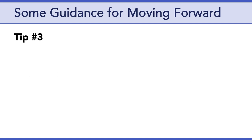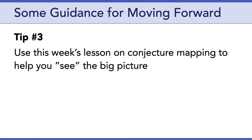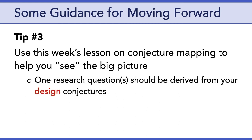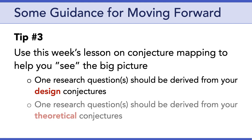Tip number three: use this week's lesson on conjecture mapping to help you see the big picture of your individual DBR proposals. This brings us to thinking about your research question. One of your research questions should be derived from your design conjectures. You might not be super clear on what a design conjecture is right now — that's okay, this week's lesson is going to introduce that concept. Another research question or set of questions should be derived from your theoretical conjectures. This week's lesson on conjecture mapping is going to help you understand and distinguish design and theoretical conjectures.